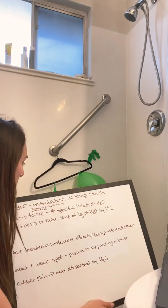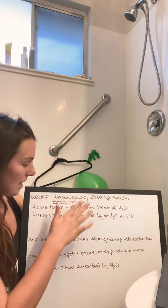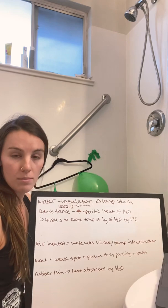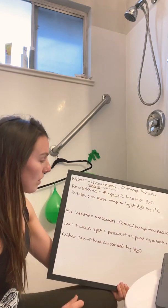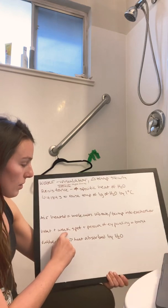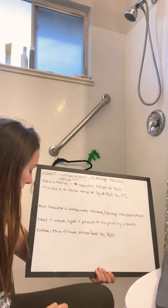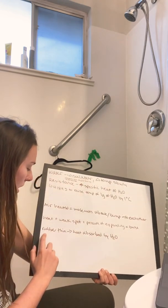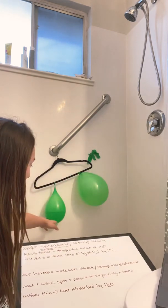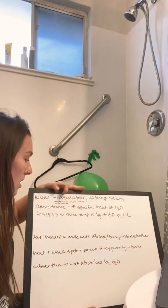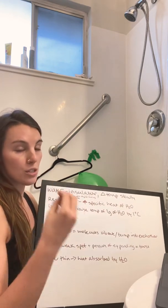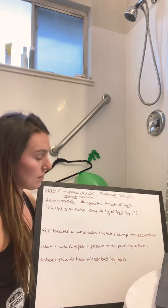Whereas placing the heat under the water balloon, I'm hypothesizing that if water is such a good insulator it will absorb that heat quickly enough and not transfer enough to make a weak spot in the rubber, allowing it to maintain integrity with the flame held under it. The rubber is thin enough that heat will quickly transfer through into the water, which will absorb it without a rapid swing in temperature. So if the water absorbs all that heat and there's no time to create a weak spot in the rubber, it should be able to maintain its integrity.